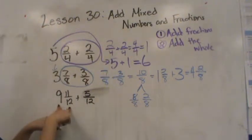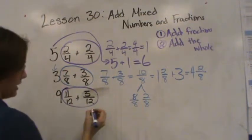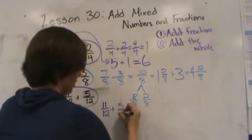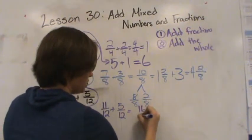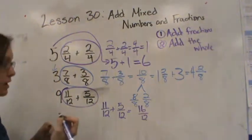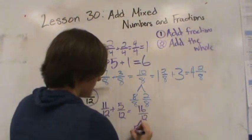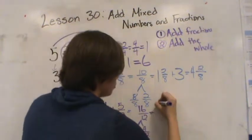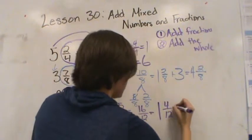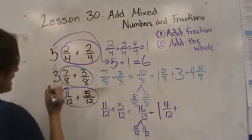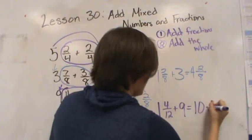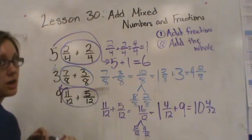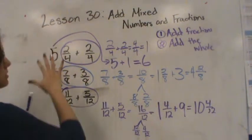Let's do this last one: nine and eleven twelfths plus five twelfths. We look at the fractions first — eleven twelfths plus five twelfths equals sixteen twelfths. That's an improper fraction, so we decompose it: twelve twelfths and four twelfths gives us sixteen twelfths, which equals one and four twelfths. Adding the nine, we get ten and four twelfths, which can also be put into simplest form since these two share a common factor.